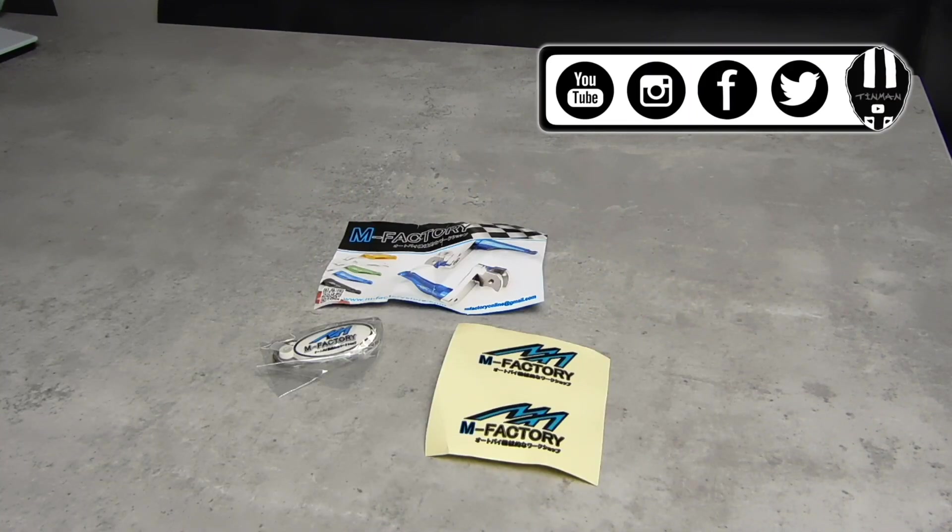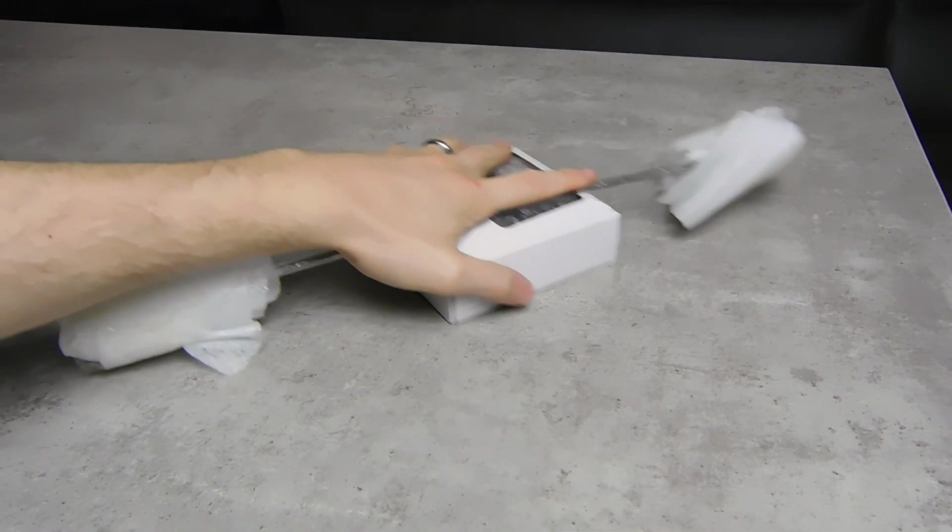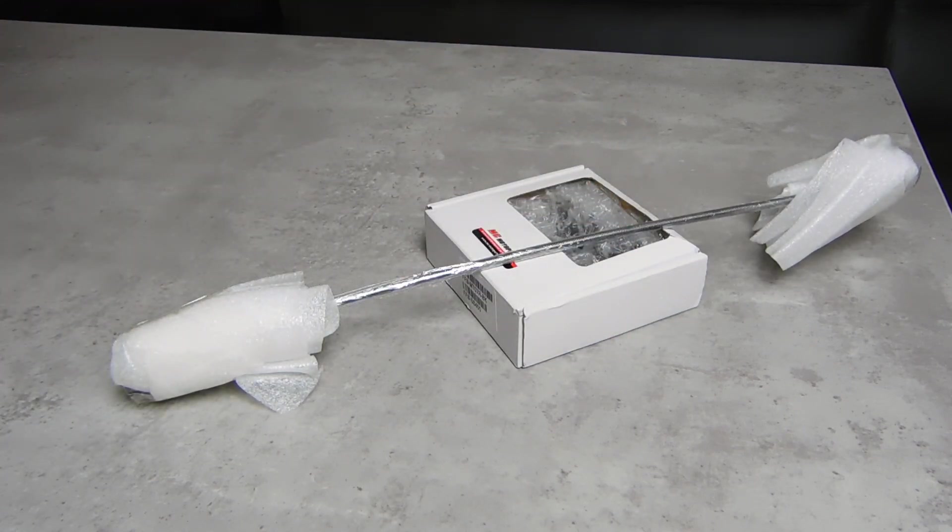So all these parts will fit the Yamaha MT07 from the first year of manufacture right up to the current day. So with that being said, let's get it on. We're going to be doing the Yamaha MT07 rear axle sliders.